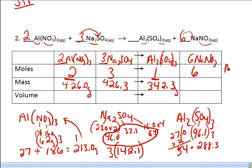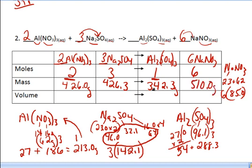And finally NaNO₃. Nitrate comes out to 62, sodium is 23, add the two together and then multiply by six because I have six of them — that comes out to a grand total of 510. Now that's a lot of work and there's a lot of room for error. So before I do anything else, I'm going to take my two reactants and add them together, then take my two products and add them together, and make sure what I start with equals what I end with. If they are equal, I'm probably on the right path.